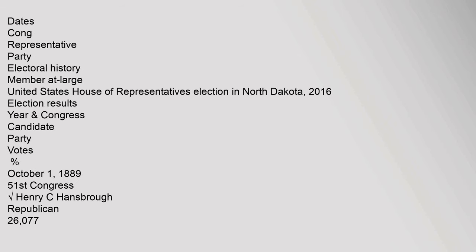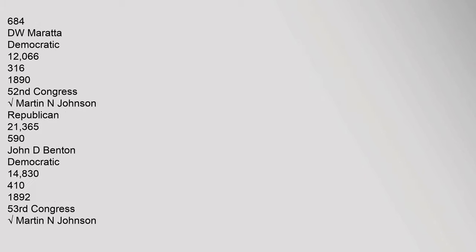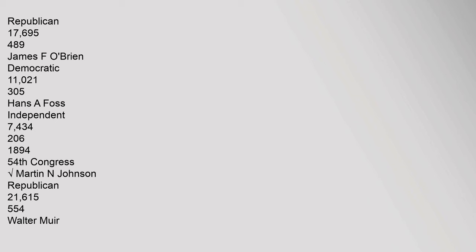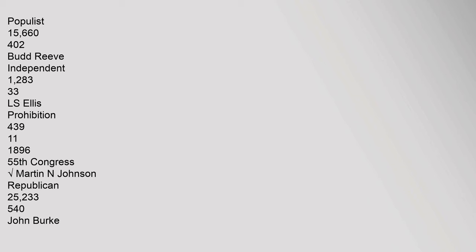Election results: 1890 (52nd Congress) — Martin N. Johnson, Republican: 21,365 (59%); John D. Benton, Democratic: 14,830 (41%). 1892 (53rd Congress) — Martin N. Johnson, Republican: 21,615; Walter Muir, Populist: 15,660; Bud Reeve, Independent: 1,216.